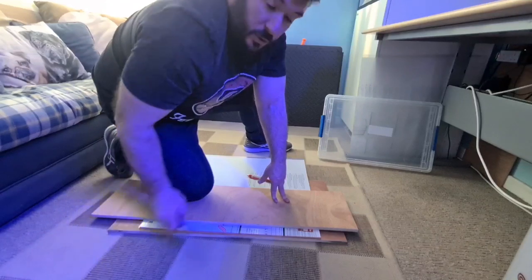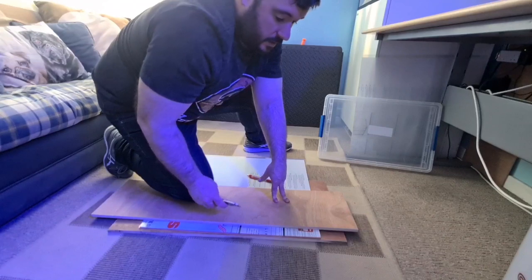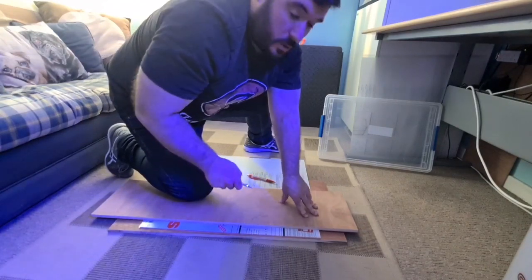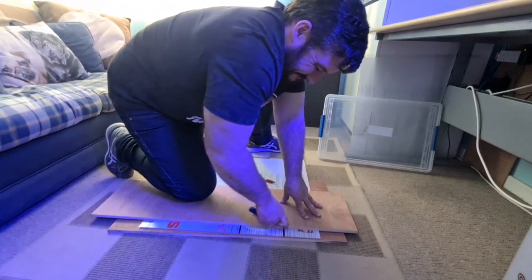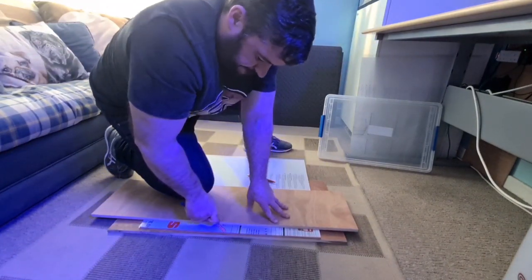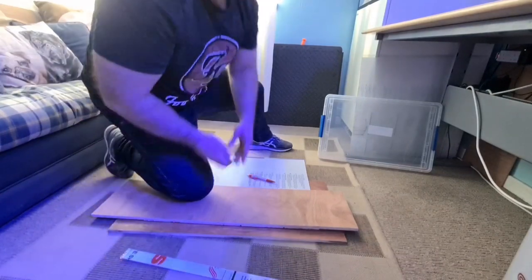So guys, cut number two is going to just take the back edge off because this overhangs the back of the tank at the moment. So we're just going to trim that excess off. Perfect.